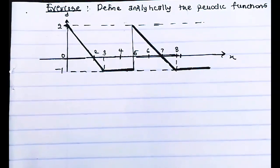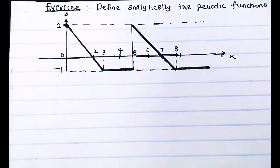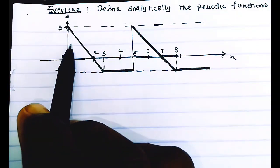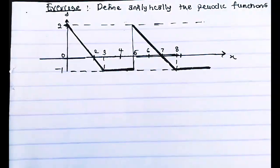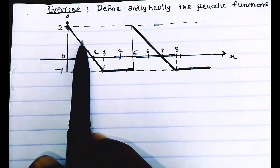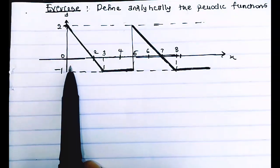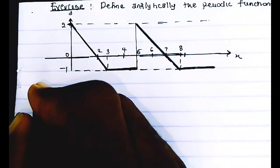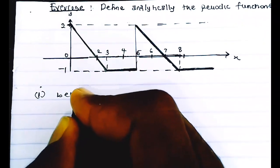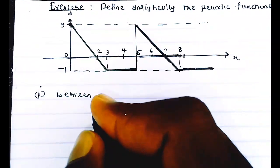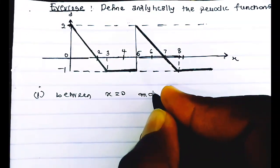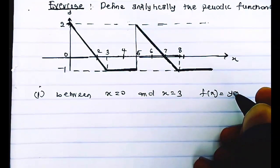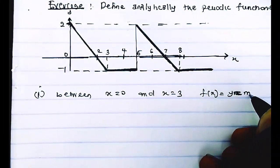Between 0 and 3 on the x-axis, we don't know the values of y because y changes throughout — it's more like the second example we did. Since the values of y keep changing, we can't assign a constant value. So let's call this Condition 1: between x = 0 and x = 3, f(x) is a straight line graph, meaning f(x) = y = mx + c.